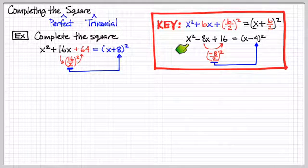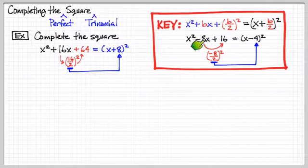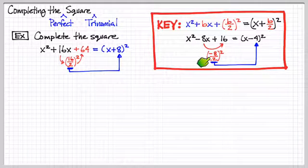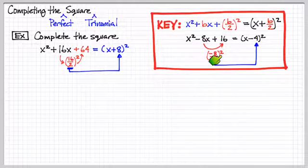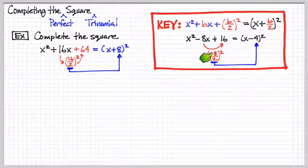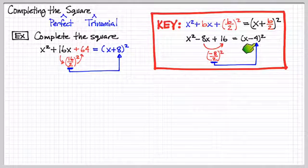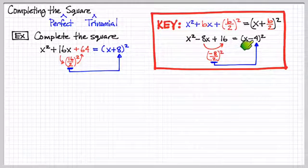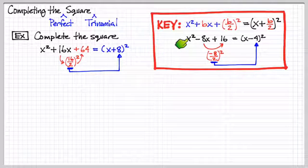And so the specific example would be x squared minus eight x, eight divided by two, or negative eight divided by two squared is sixteen, negative eight divided by two is negative four, so x minus four squared is equal to this here.